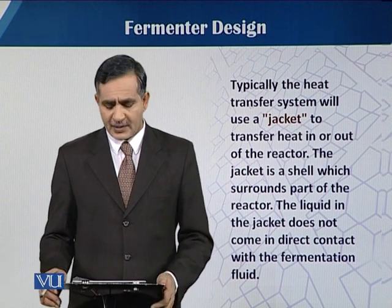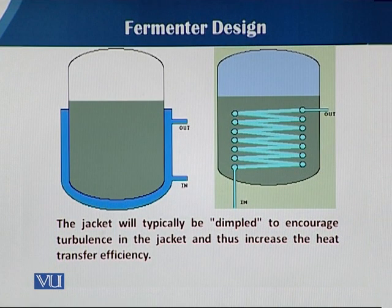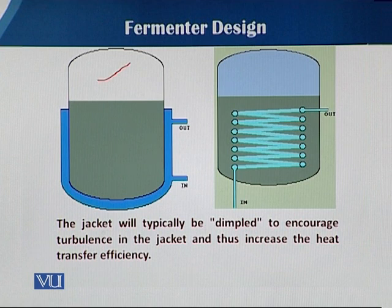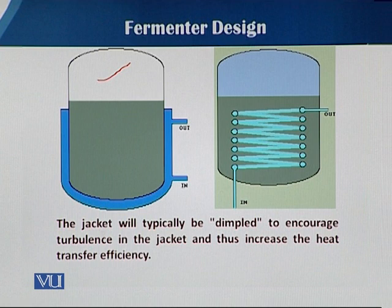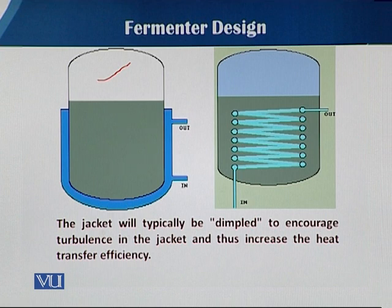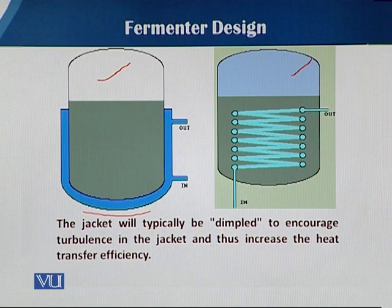This is mostly used in small scale fermenters. As you can see in this slide, there are two types of systems. One is the jacket type — the blue color shows the jacket around the fermentation vessel, and hot and chilled water comes in and circulates around the vessel. On the other hand, there is a round coil through which the same hot and chilled water circulates. These are the two strategies by which the temperature is controlled.